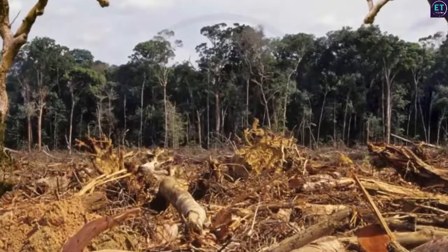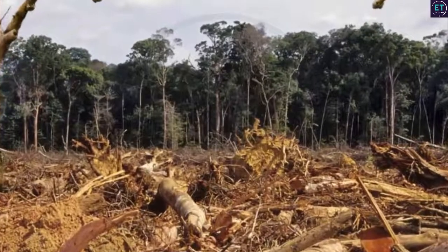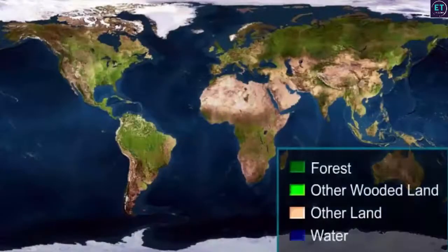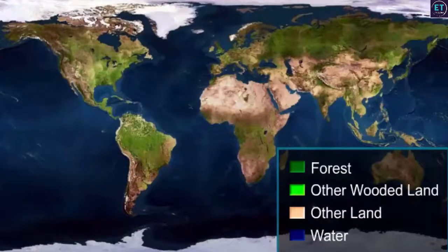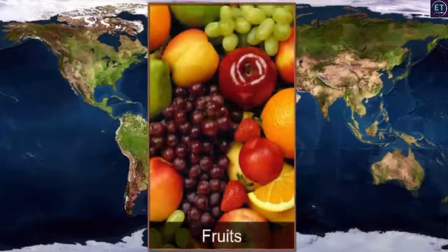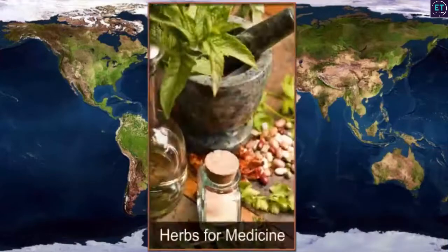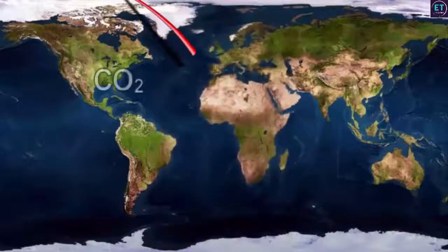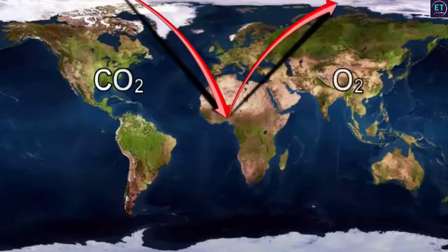What would the world be like if there were no trees? Forests form an important part of our ecosystem and are beneficial to us in various ways. They provide different useful things that we use in our everyday life and also remove carbon dioxide and add oxygen to the atmosphere. So, you can imagine what would happen if we had no trees.